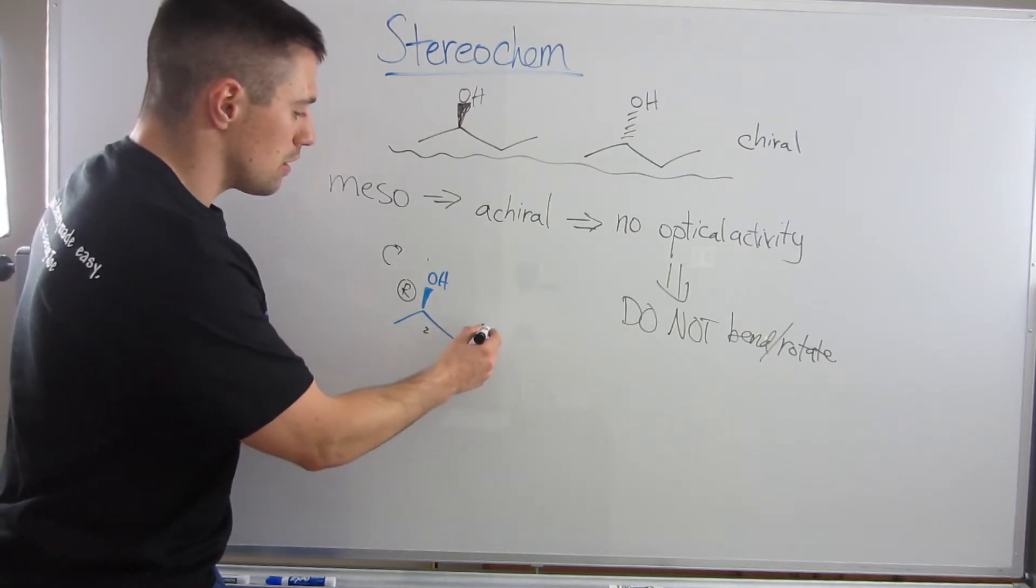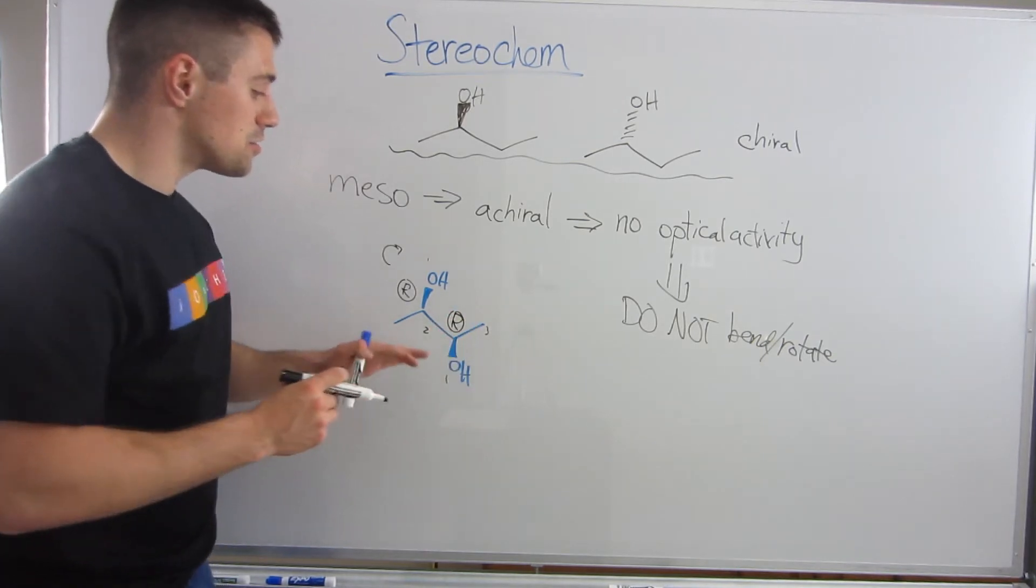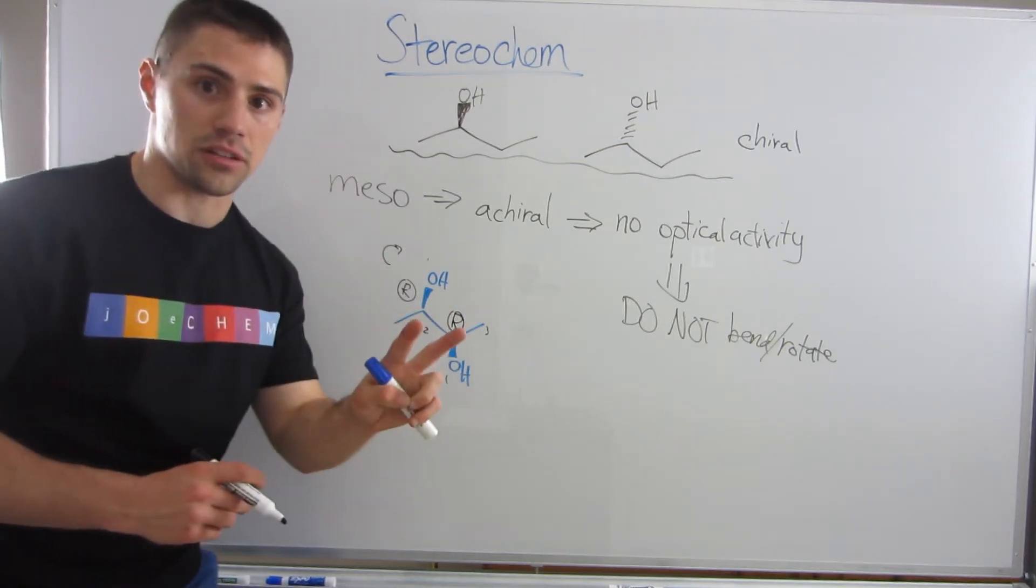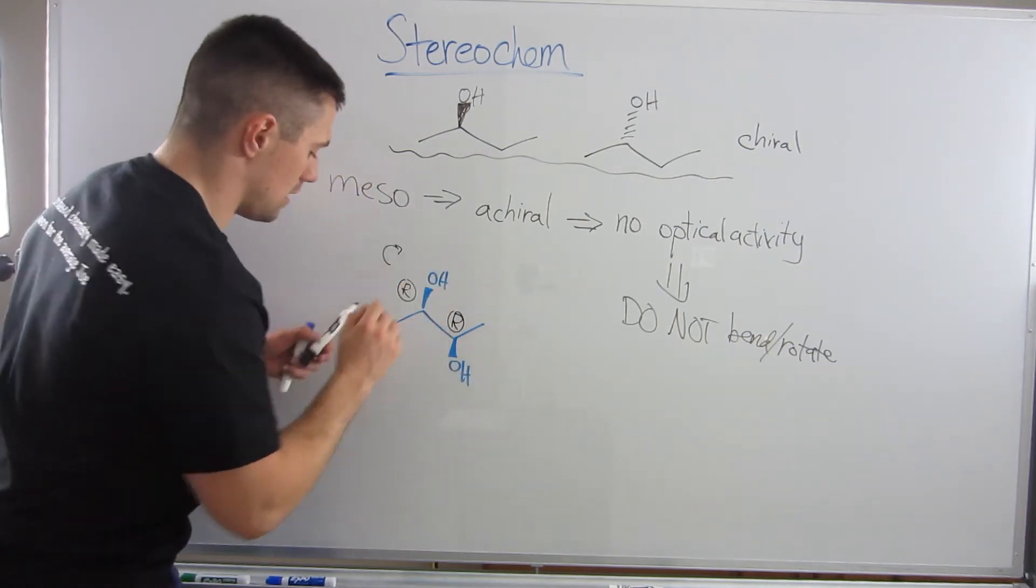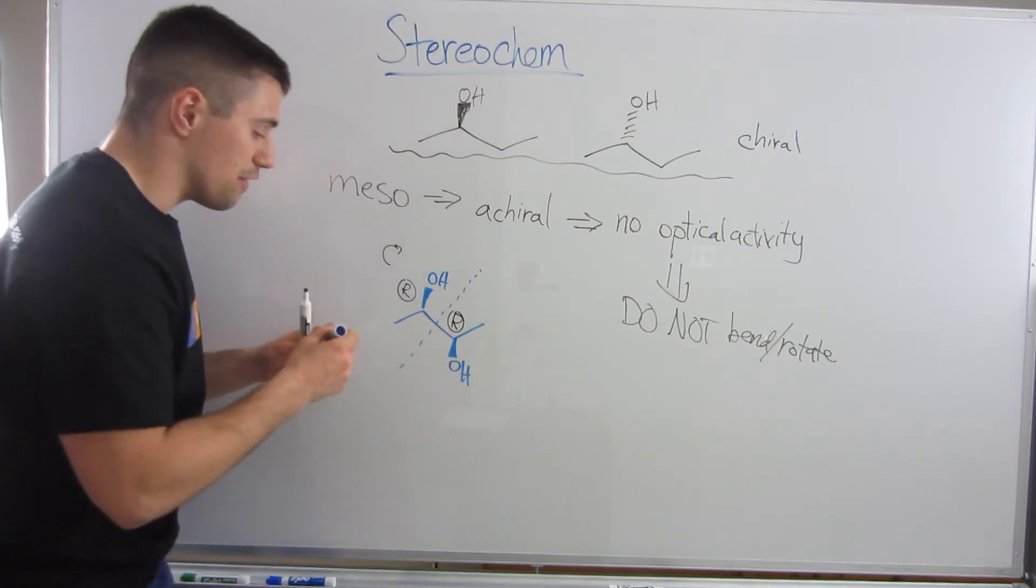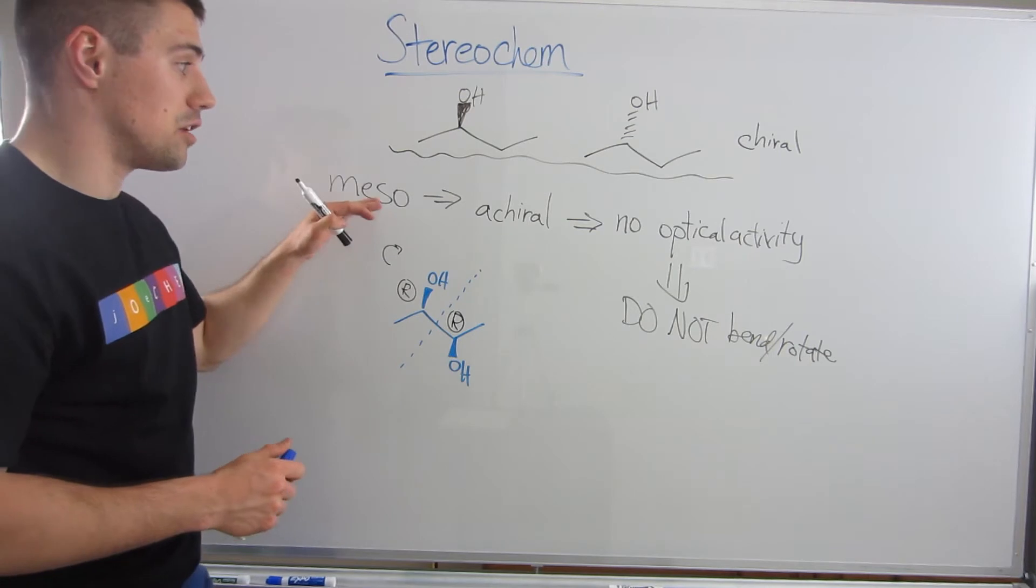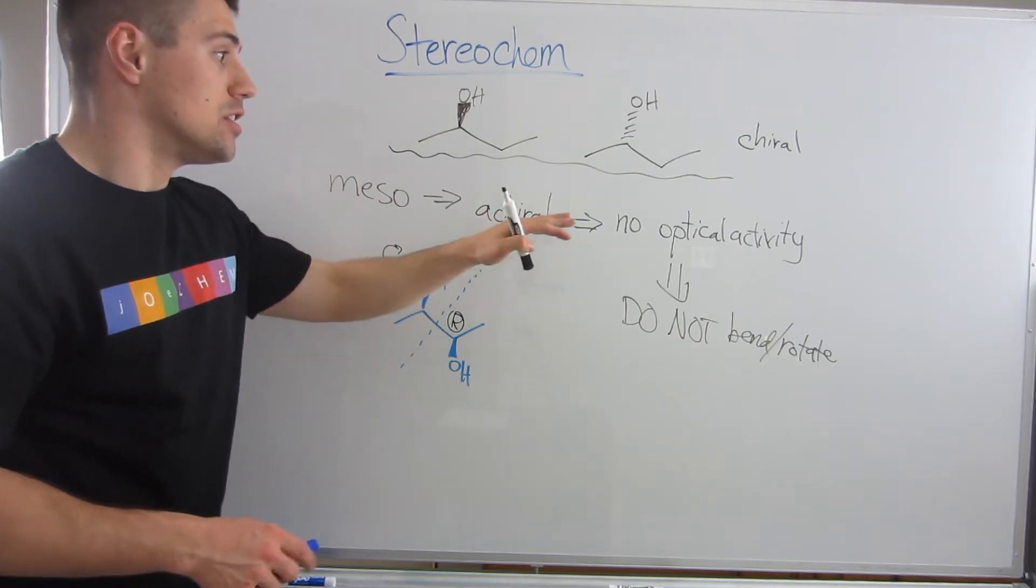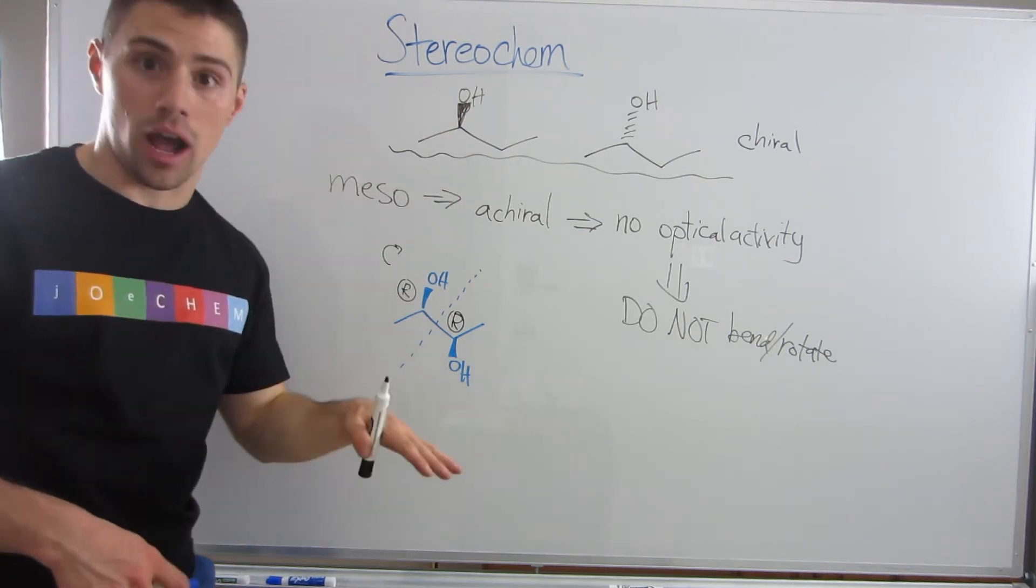This is also an R stereocenter. This molecule has two stereocenters. However, I think we can all see this plane of symmetry right here. The fact that this has a plane of symmetry means that this structure is meso and it is achiral. So this structure exhibits optical activity. However, this one does not.